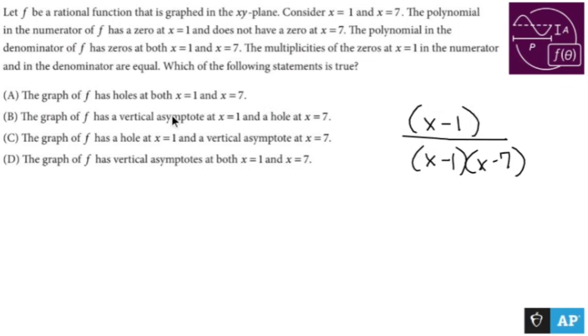But we're probably dealing with holes and vertical asymptotes just by looking at the words. So which of the following statements are true? I can look at this and easily say that whenever I have a factor up here that's literally the same exact thing down there, that tells me that I have a hole at x equals 1.